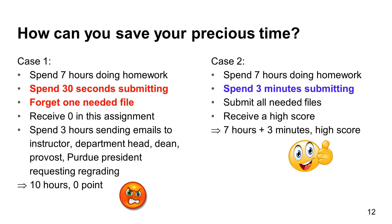This student then spends several hours sending emails to the instructor, the department head, the dean, the provost, and the university president asking for more points. Because this is the student's mistake, the student's score remains unchanged at zero. The second student spends a few minutes carefully checking that all needed files are submitted correctly and receives a high score.